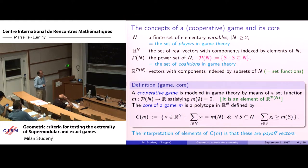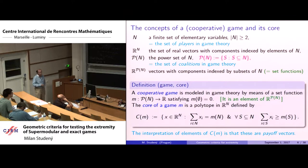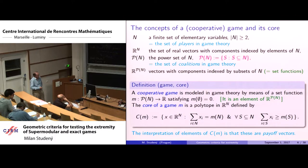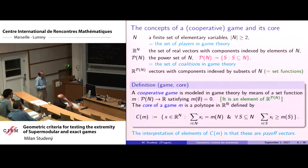The core of a game is defined as follows. A cooperative game is modeled by a set function whose only requirement is that the value for the empty set is zero. The core is a polytope defined by inequalities: for every coalition S, the sum over components in S must be at least M(S), plus one linear equality constraint that the sum equals M(N) for the grand coalition. The components represent payoffs to players in a game about dividing money.